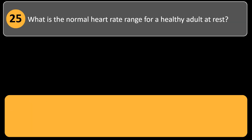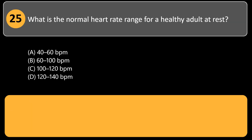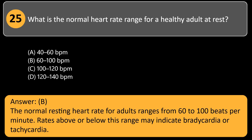What is the normal heart rate range for a healthy adult at rest? A. 40–60 BPM. B. 60–100 BPM. C. 100–120 BPM. D. 120–140 BPM. Answer: B. The normal resting heart rate for adults ranges from 60–100 beats per minute. Rates above or below this range may indicate bradycardia or tachycardia.